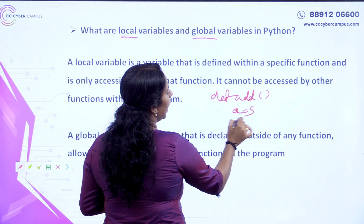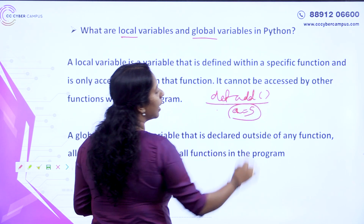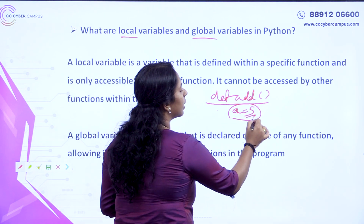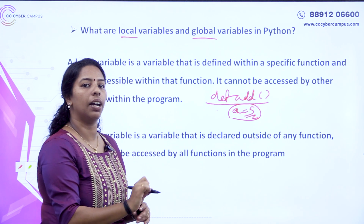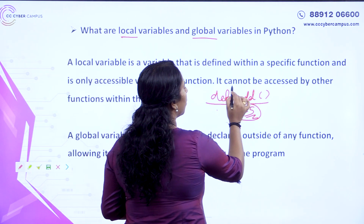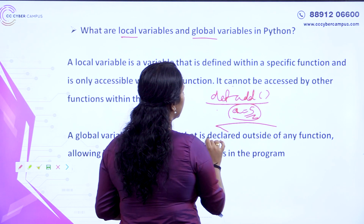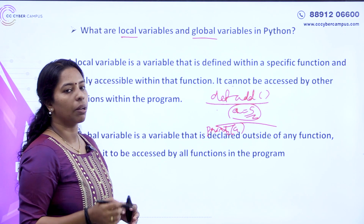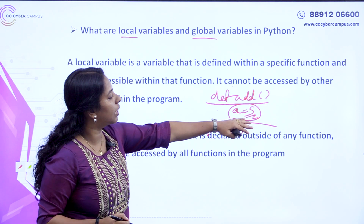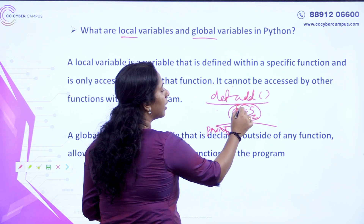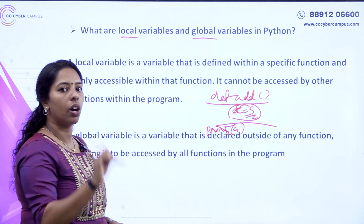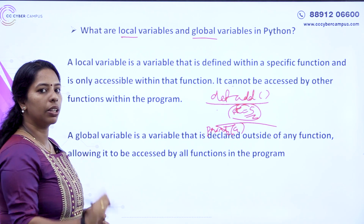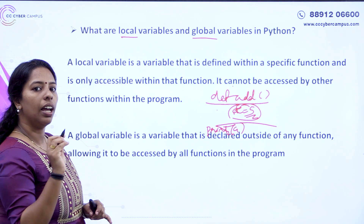A is equal to 5. If we call a = 5, we can use it in that function. If we call it a = 88, for local variables, you know the variable values are only revealed inside that function.